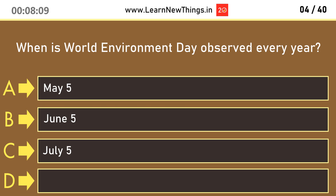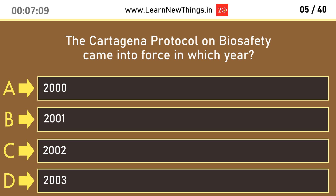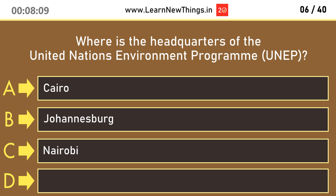When is World Environment Day observed every year? June 5. The Cartagena Protocol on Biosafety came into force in which year? 2003. Where is the headquarters of the United Nations Environment Program? Nairobi.